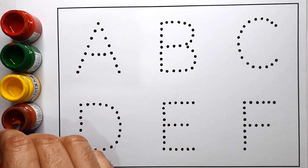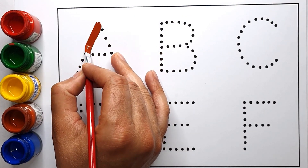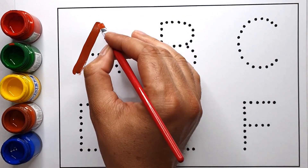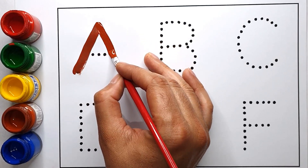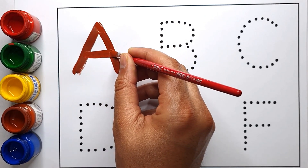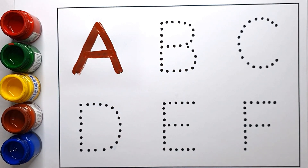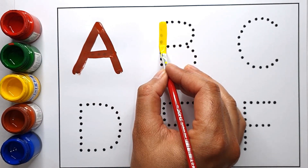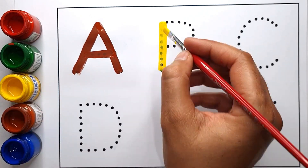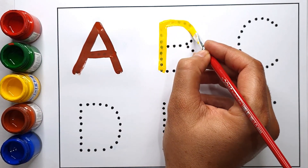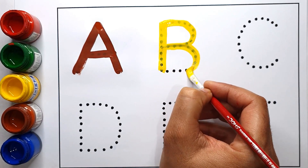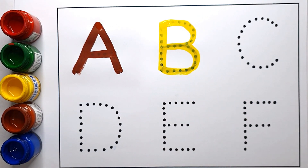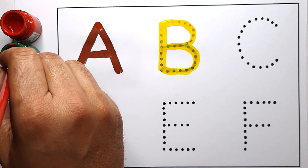Brown color. A, A for apple. Yellow color. B, B for banana. Green color.